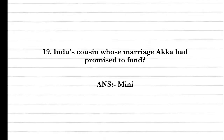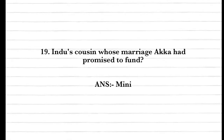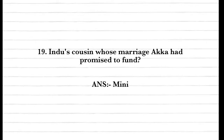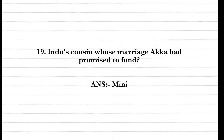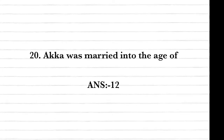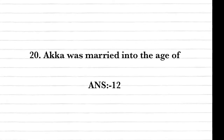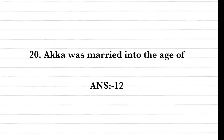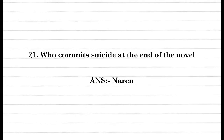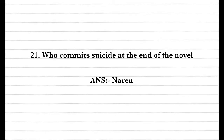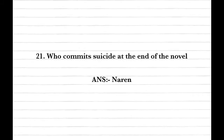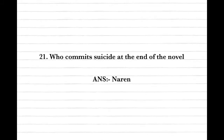Question nineteen: Hindu's cousin whose marriage Akka had promised to fund? Answer: Minnie. Question twenty: Akka was married at the age of 12. Question twenty-one: Who commits suicide at the end of the novel? Answer: Nareen.